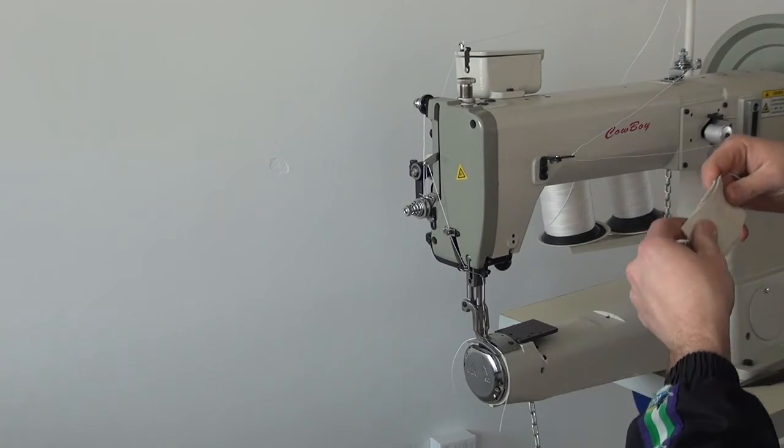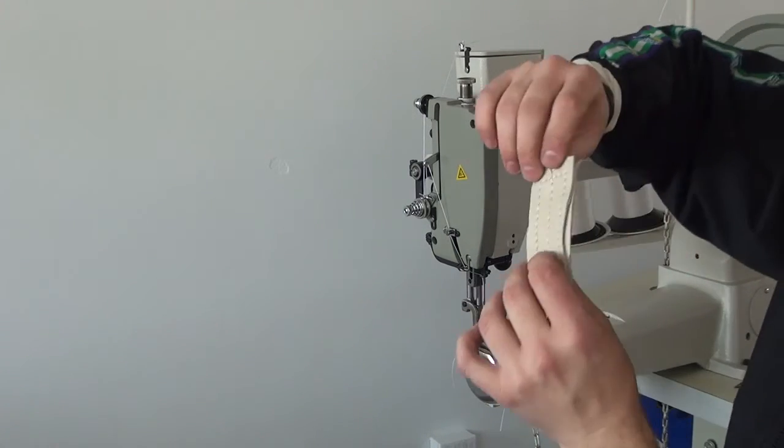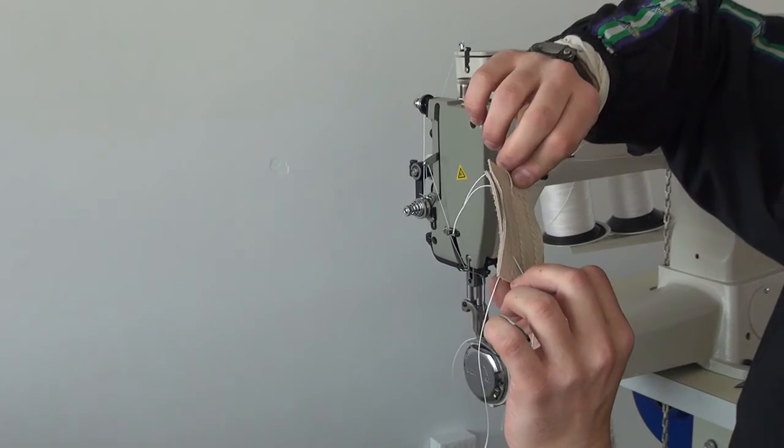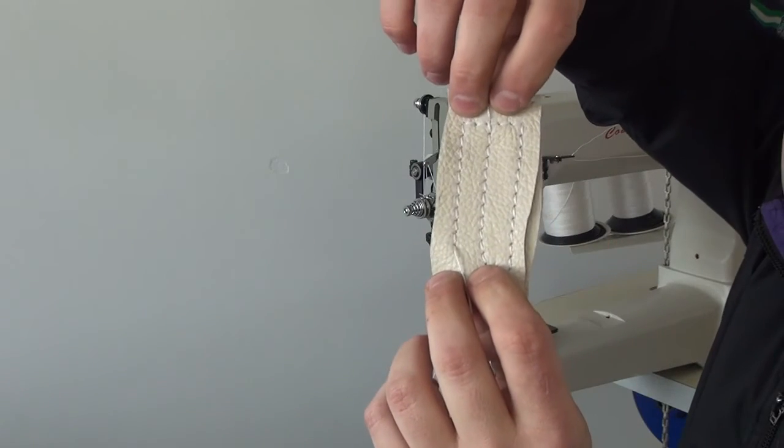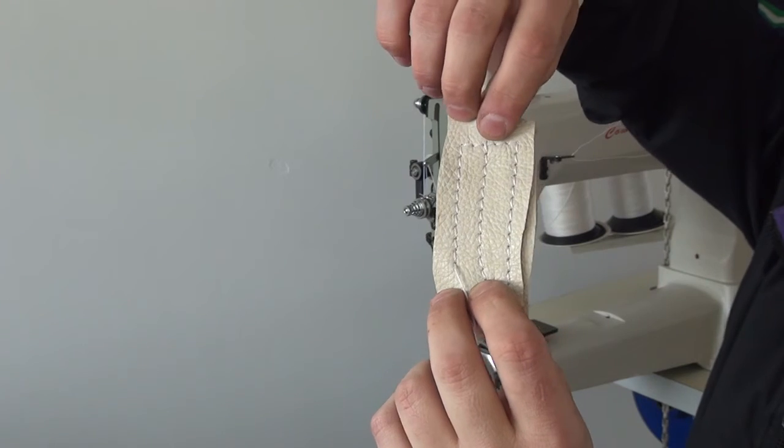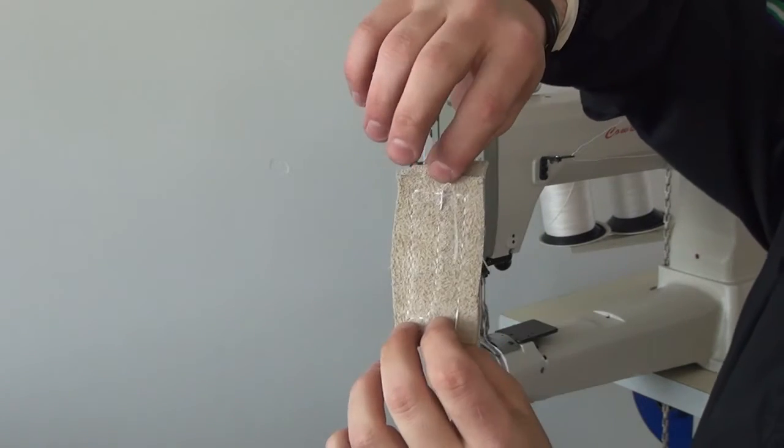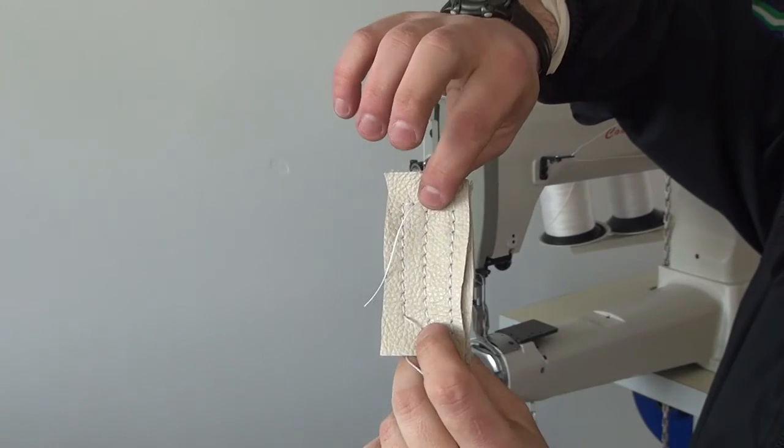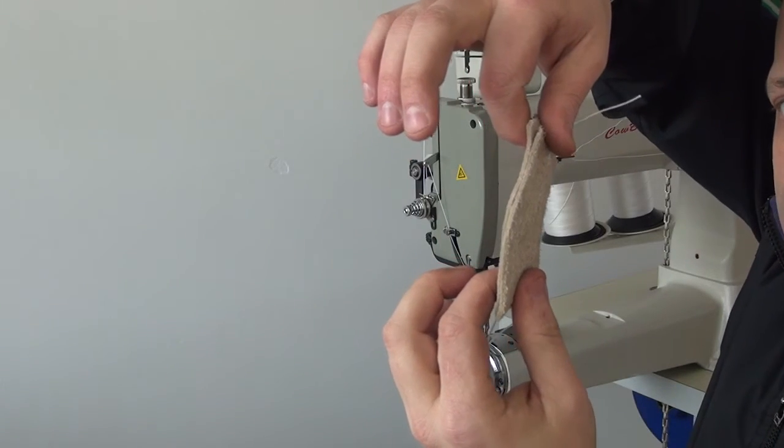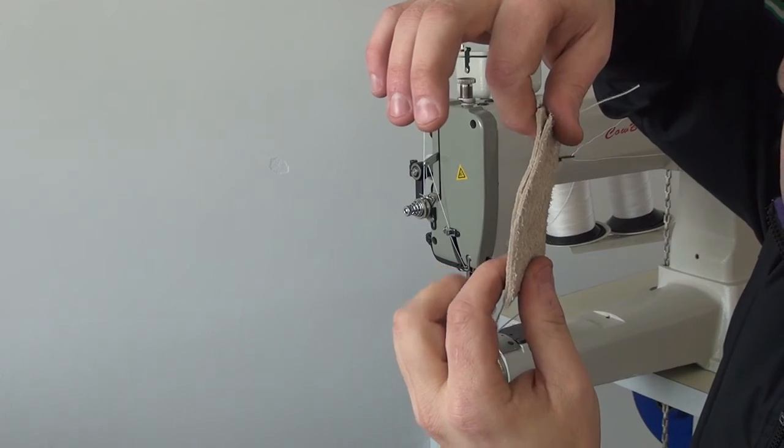And so again, what we have here are two layers of approximately four ounce upholstery weight leather. And again, you can see that the stitches are very even. The knots are not pulled to the top of the material like what you do see a lot with some very heavyweight sewing machines when you're sewing through lightweight materials. And again, just to give you an idea of the thickness, you can see how thin this particular material is.